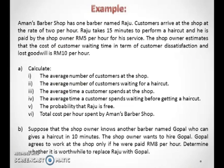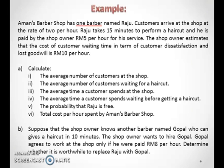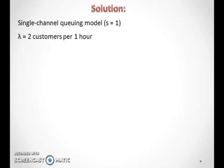Let's look at an example. Aman's Barber Shop has one barber named Raju. Since there is only one barber, this problem is a single-channel queuing model, so S equals one. Customers arrive at the shop at the rate of 2 per hour, and Raju takes 15 minutes to perform a haircut. Thus, lambda equals 2 customers per hour and mu equals 1 haircut per 15 minutes.